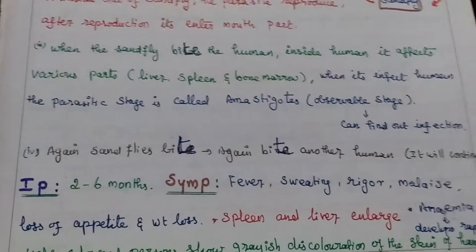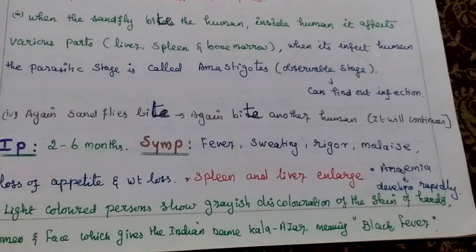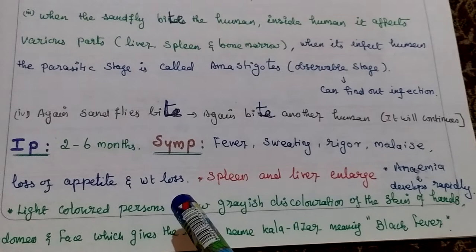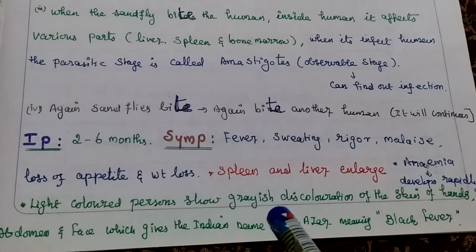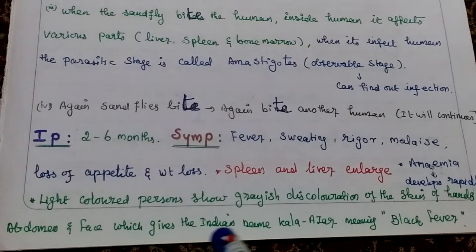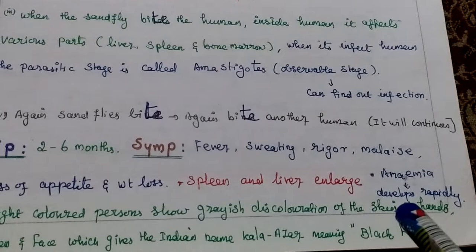The symptoms caused include fever, sweating, rigors, loss of appetite, and weight loss. There is spleen and liver enlargement. In light-colored persons, there is grayish discoloration of the skin of the hands, abdomen, and face, which gives the Indian name. Kala Azar is a Hindi name meaning black fever. It also rapidly develops anemia.